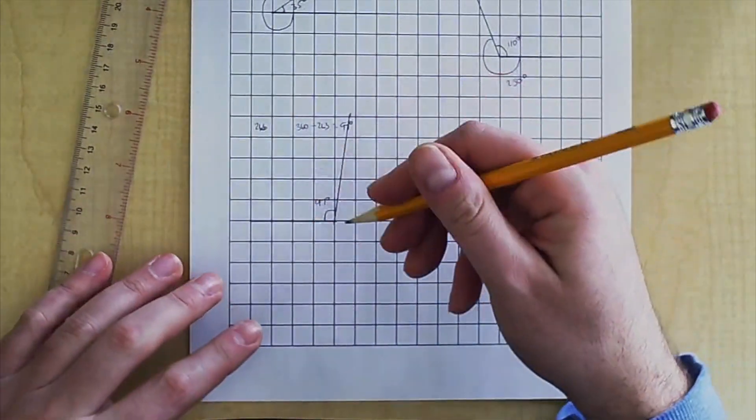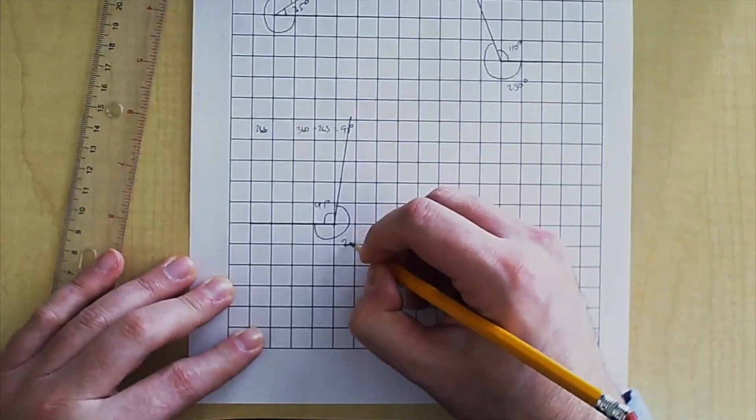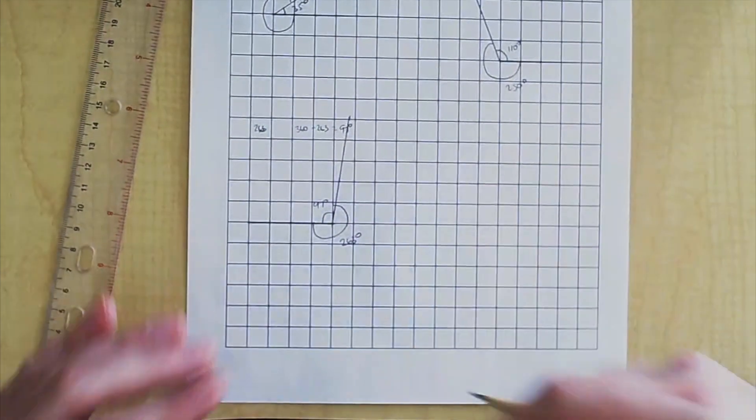But because we're looking for the reflex angle, it is on the outside. That is 263 degrees. That's how you would do it.